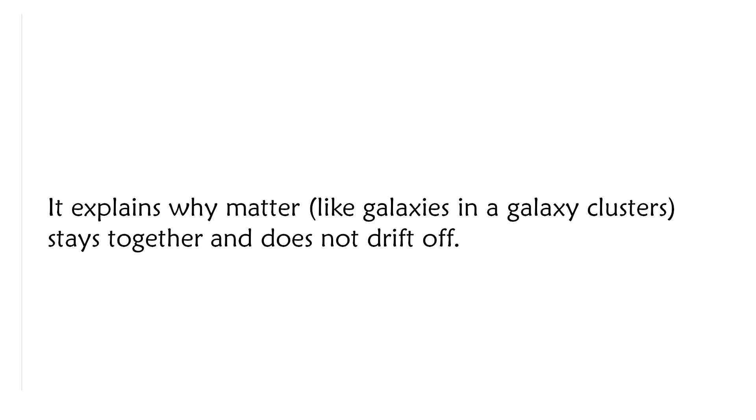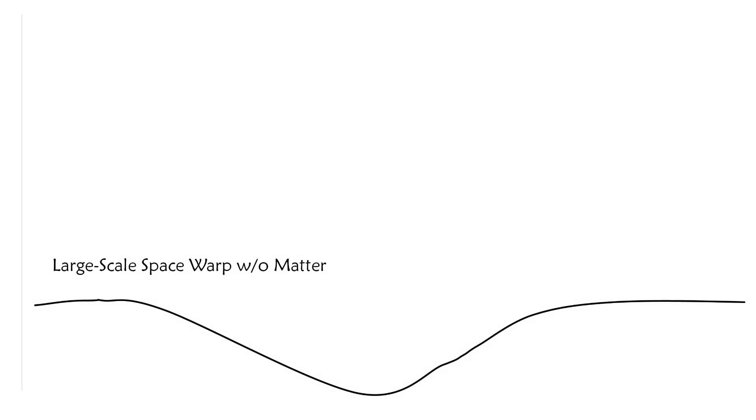It explains why matter like galaxies in a galaxy cluster stay together and do not drift off. Imagine a large scale space warp without matter being warped like this. Our solar system, of course a lot smaller, shows similar space warp but with matter.